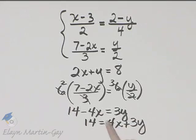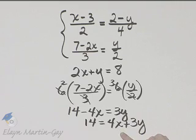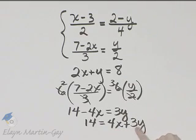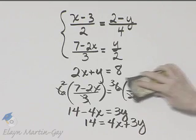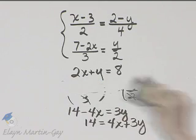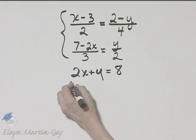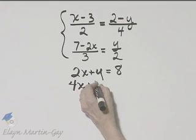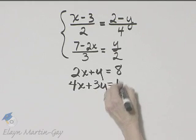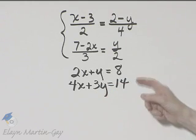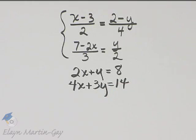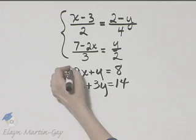In other words, I added 4x to both sides. But when I write it up here, I'm going to write it as 4x plus 3y is equal to 14. These are equivalent equations to the original equations, so this is an equivalent system.